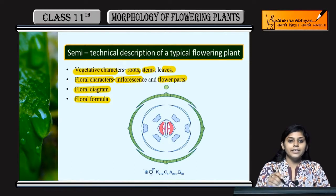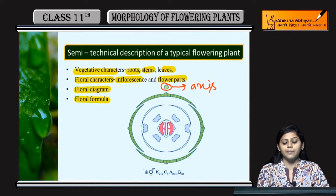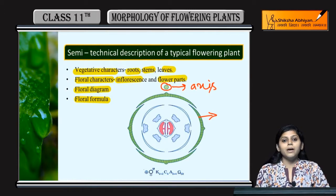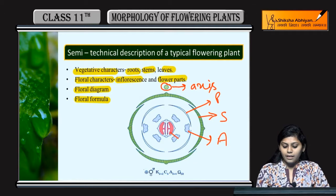Aap yahan niche jo floral diagram di hai woh show karti hai axis ko, jise mother axis bhi bolte hain - ye green part hai. Iske baad sepals hain, iske andar petals hain, phir androecium part aur gynoecium part hota hai.